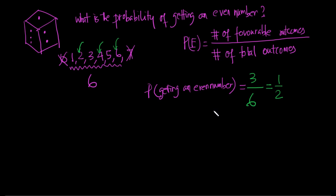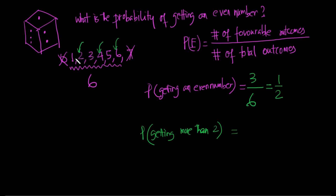What is the probability of getting more than 2 when rolling a dice? The favorable outcomes — numbers greater than 2 — are 3, 4, 5, and 6, so there are 4 favorable outcomes. The total number of outcomes is 6, so the probability is 4/6, which simplifies to 2/3.